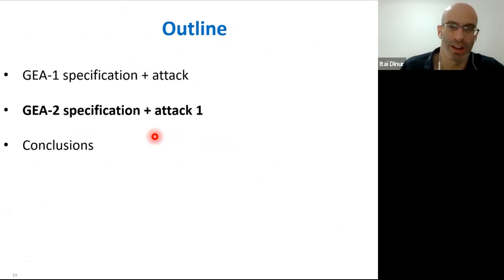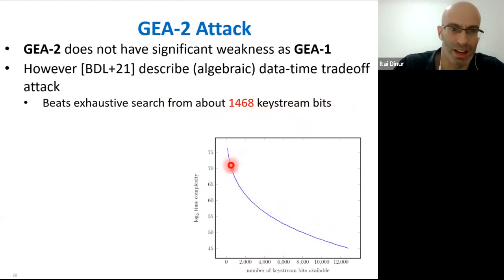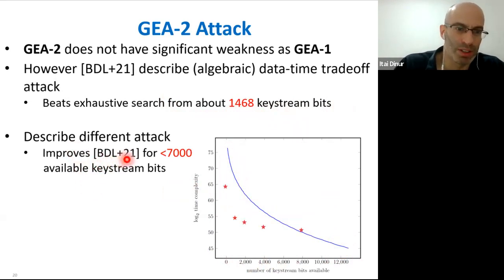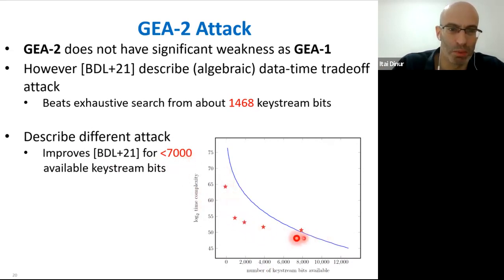Now let's move quickly to the GEA2 attack. GEA2 does not have a significant weakness like GEA1, but the previous paper still described an attack faster than exhaustive search only from around 1,400 keystream bits. We describe a different attack that improves upon the previous one given at most 7,000 keystream bits — a more limited amount of data that may be more practical. Specifically, given 1,100 bits of keystream, our attack achieves time complexity 2^54 versus the previous best of exhaustive search at 2^64 — an improvement by a factor of 2^10.